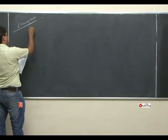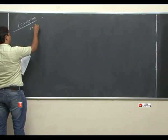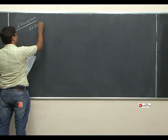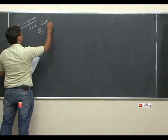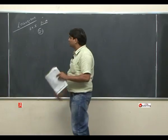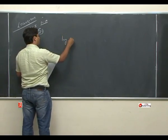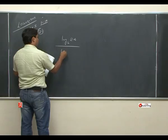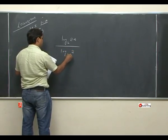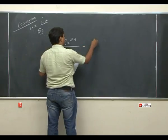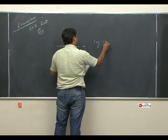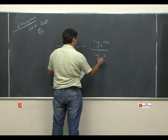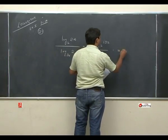Logarithm, Exercise 1. Question number 21, page number 14. Question number 21: prove that log 24 base 2 upon log 2 base 96 minus log 192 base 2 into log 2 base 12 — prove that this expression's value is 3.